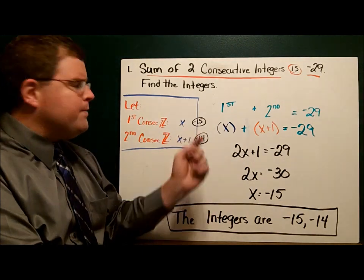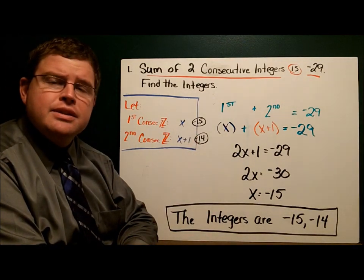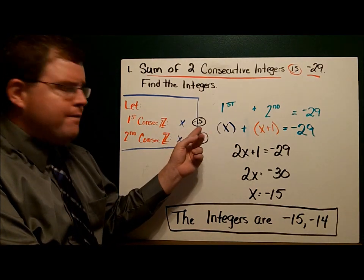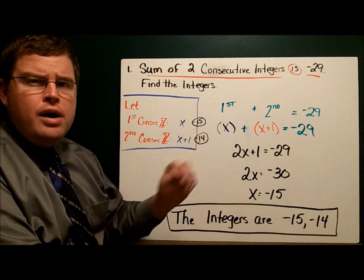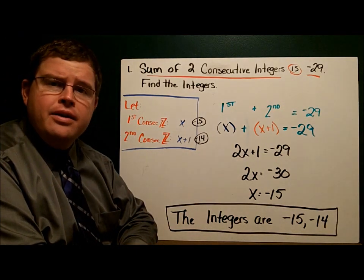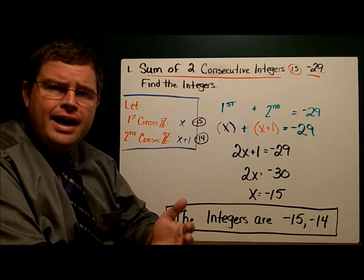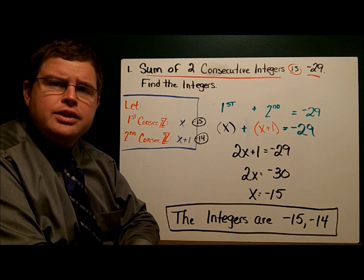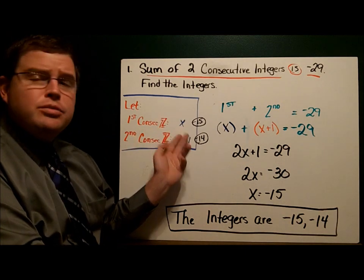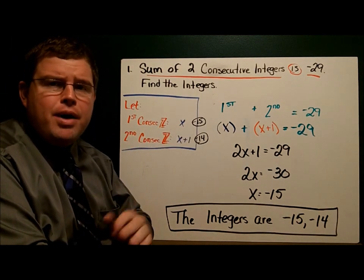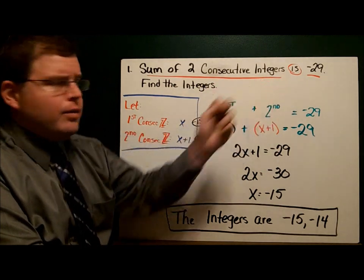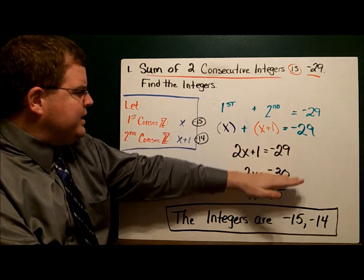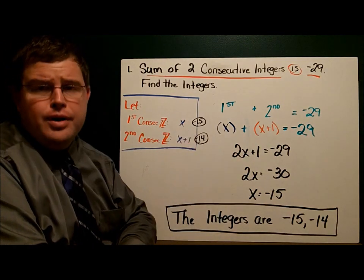Negative 15 is the first of my integers. The next one is x plus one: negative 15 plus one is negative 14. So my two consecutive integers are negative 15 and negative 14. That's really all there is to it. You just need to write out your let statements — which is your guide in setting up the problem — fill out the equation using what's given, solve, and get your two numbers.